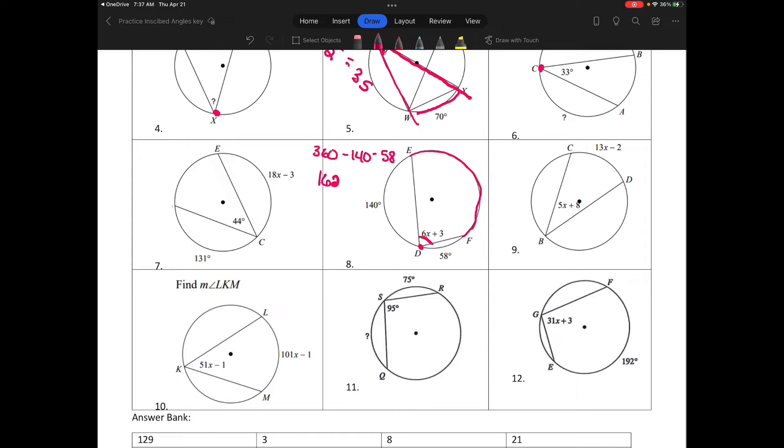Will I set 162 equal to 6x plus 3? No, because this angle would actually be half of 162. This angle measure would actually be 162 divided by 2, which is 81. So we would have to say that 6x plus 3 is equal to 81.